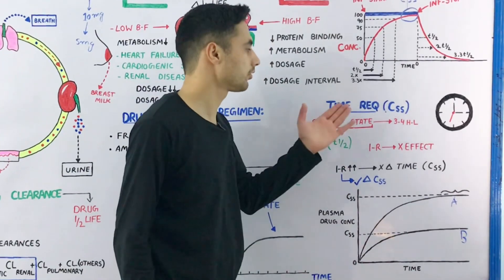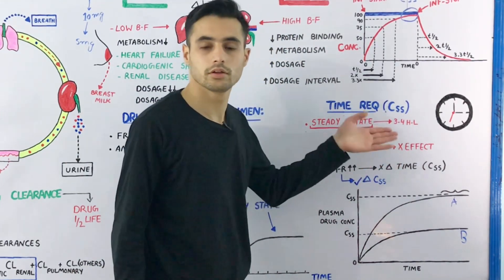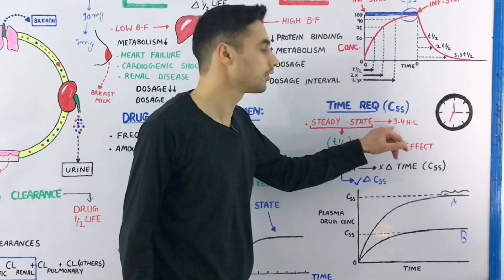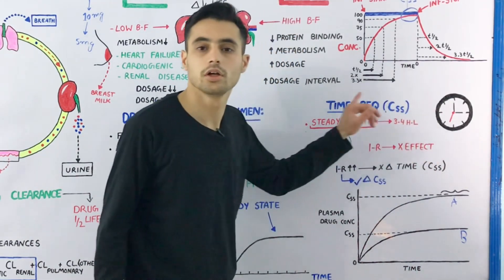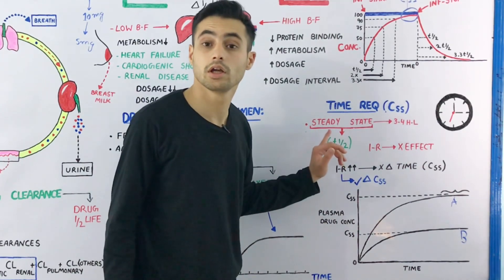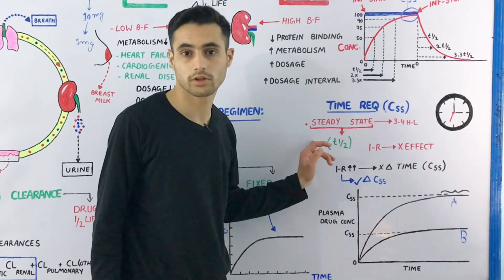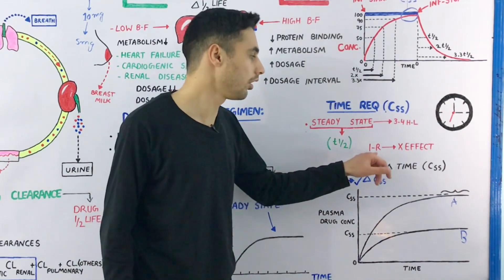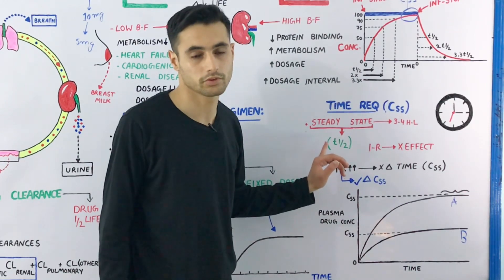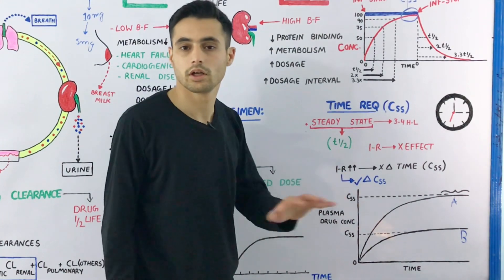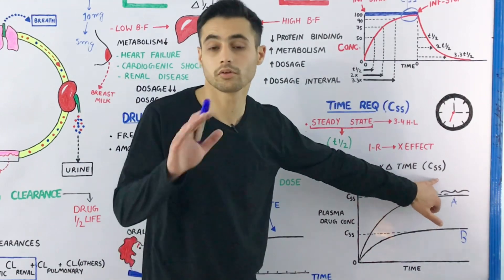The time required to obtain the steady state concentration — for most drugs this is achieved after three to four half-lives. Importantly, this time only depends on the half-life and the factors that affect the half-life. It does not depend on the infusion rate. If you increase the infusion rate, it has no effect on the time required to achieve steady state concentration.